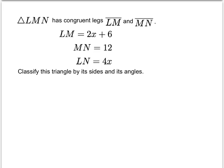Here's a quick example dealing with a triangle with congruent legs. In other words, we know for sure that this triangle is isosceles. Then it says classify the triangle by its sides.